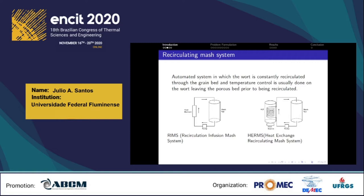In more compact systems, which can be common in microbreweries or among home brewers, these two processes are done in the same vessel, and many times in parallel. These are called recirculating mash systems. They are automated systems where the wort is constantly recirculated to the grain bed, and temperature control is usually done on the wort leaving the porous bed.